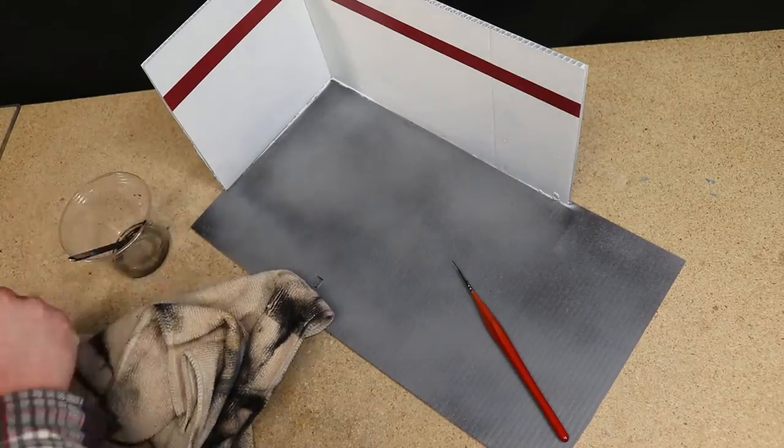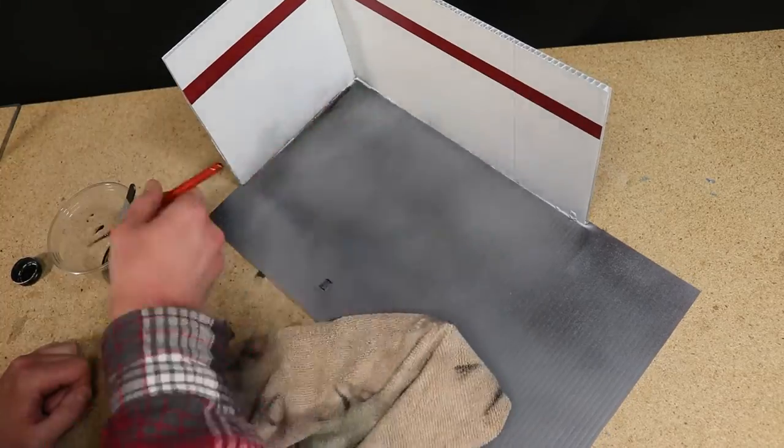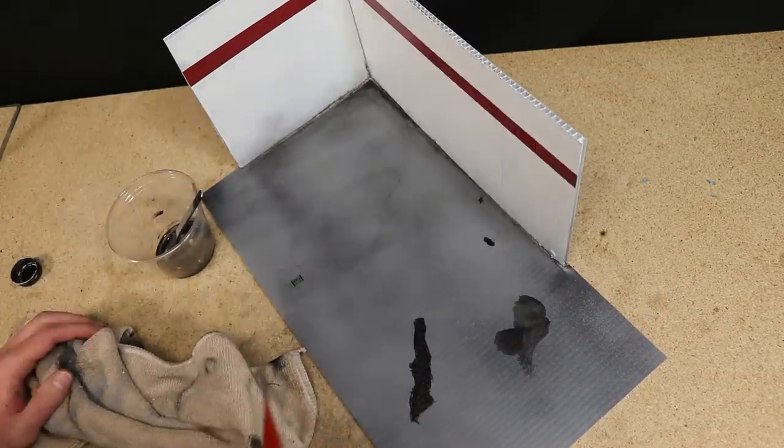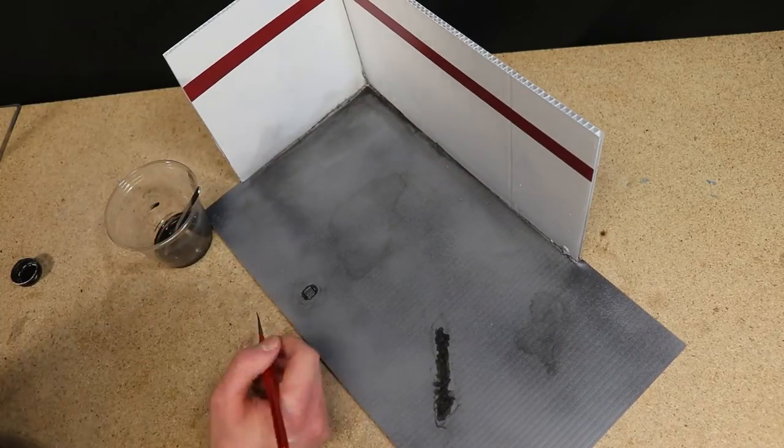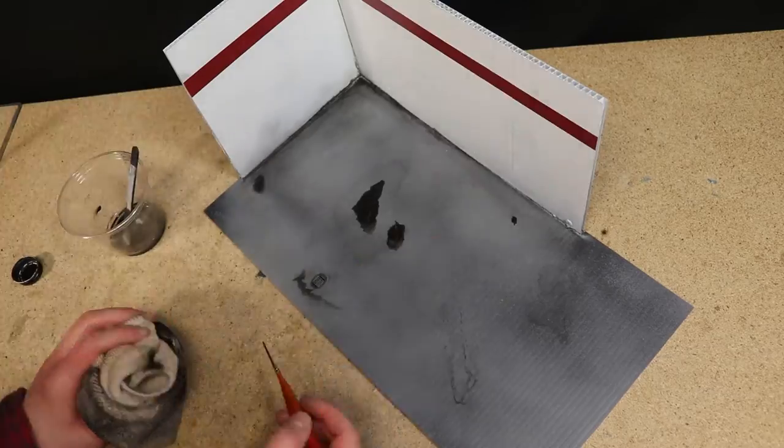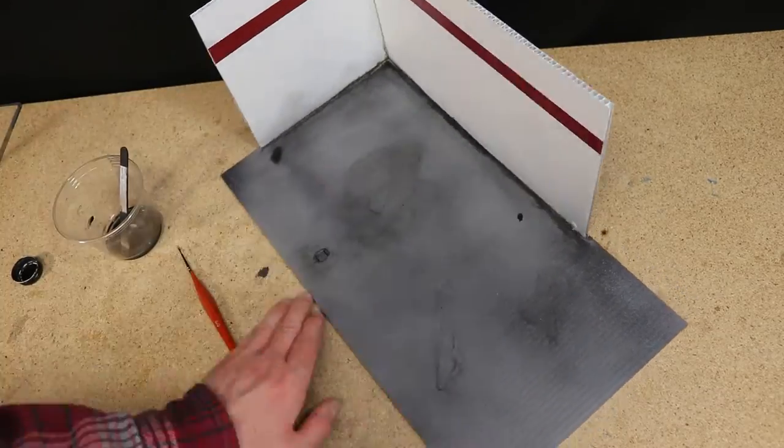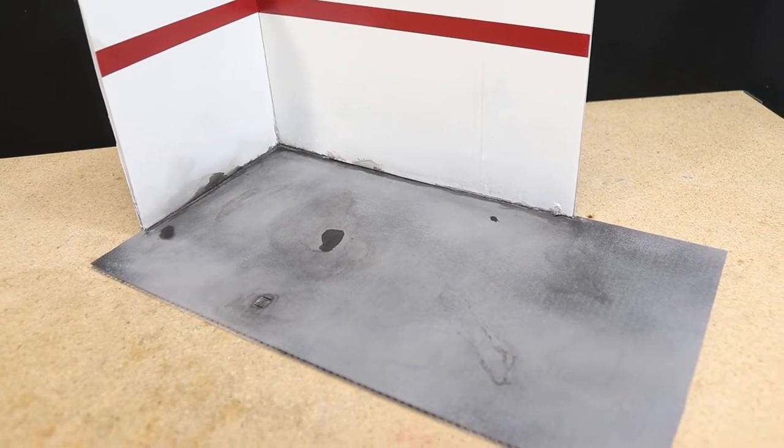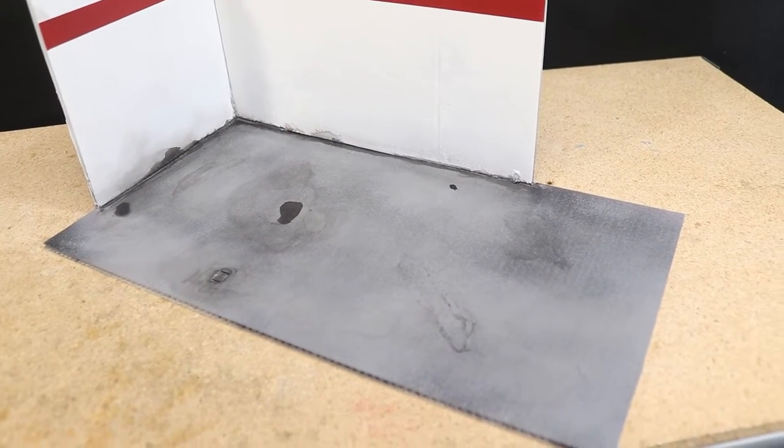I wanted to add some wear and grime to the floor and the walls, along with some oil spills, cracks, and other details. Just some black acrylic paint thinned out with water was all I used to do this. I experimented with different techniques of applying the paint and wiping some of it away. You can use real world photos for inspiration.